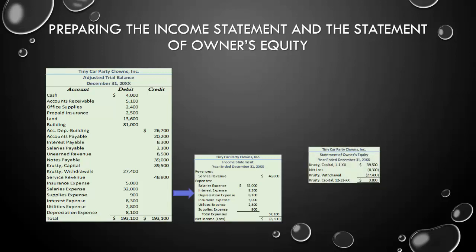After we prepared our income statement, we need to prepare our statement of owner's equity. We're going to start with our capital account using the balance on our adjusted trial balance. Krusty's capital at the beginning of this period was $39,500. If there's an owner contribution, you would include it here — let's assume Krusty didn't contribute anything during the period. The next thing we bring in is our loss, and lastly, the other decrease to capital is withdrawals, which we take right from the adjusted trial balance.